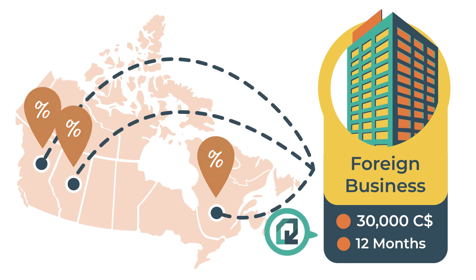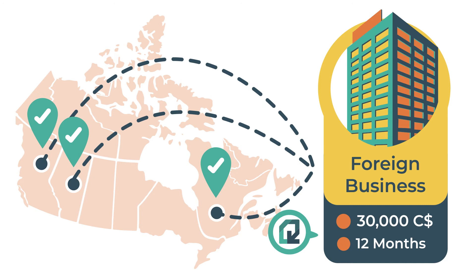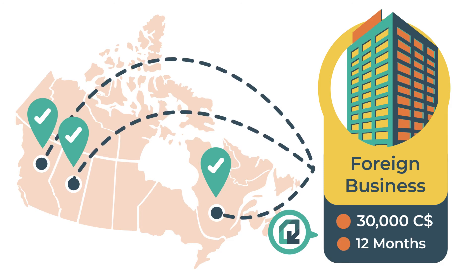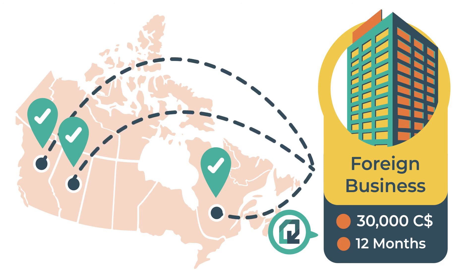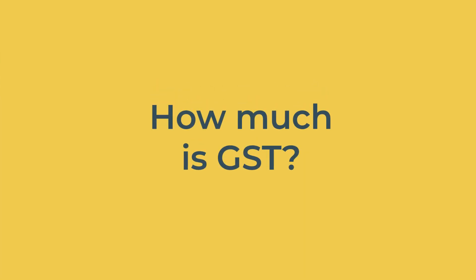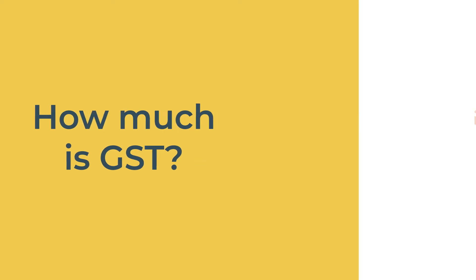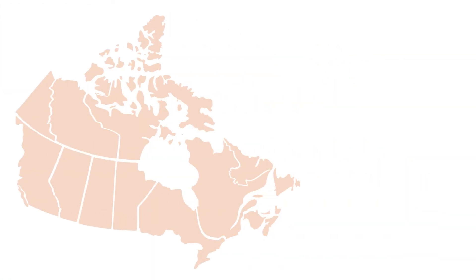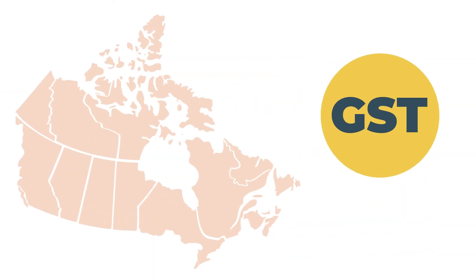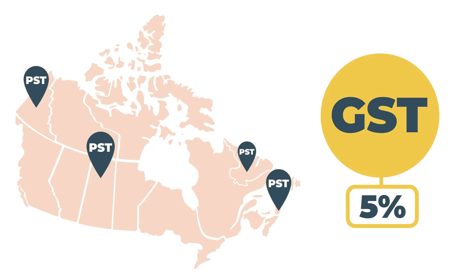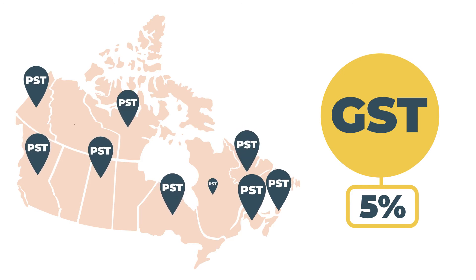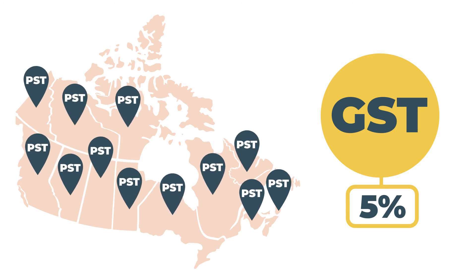Or use a tax compliance tool like Quaderno that monitors this for you automatically. How much is GST? Canada's nationwide GST is 5%, but some provinces add their own local tax too, usually called provincial sales tax, or PST.